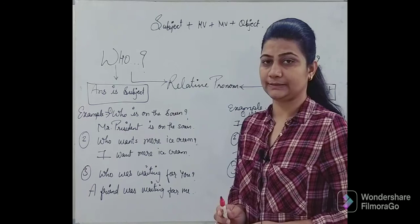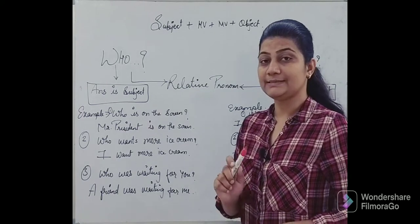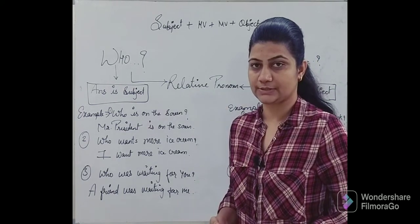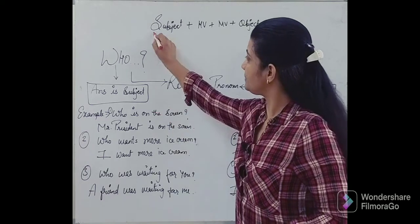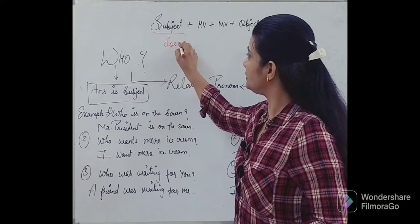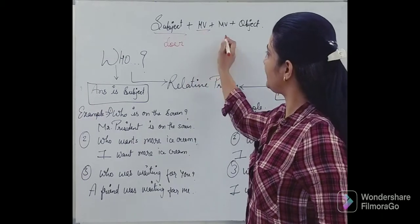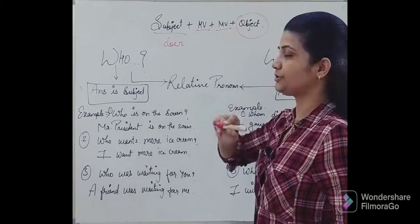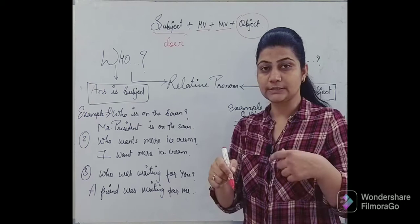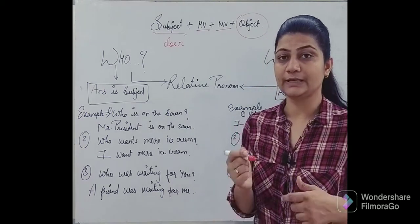When we talk about a sentence, what is the collection of words? In the sentence, there is a subject who is the doer. Then there is a helping verb, a main verb, and an object. The object is the one who has received a task or has been given a job.